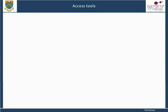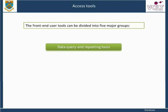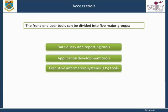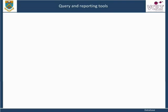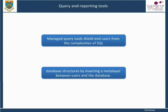The front-end user tools can be divided into five major groups: data query and reporting tools, application development tools, executive information systems tools, online analytical processing OLAP tools, and data mining tools. Managed query tools shield end users from the complexities of SQL and database structures by inserting a meta layer between users and the database.